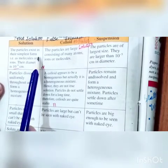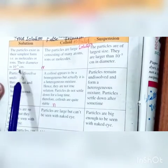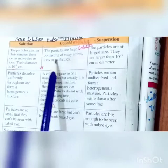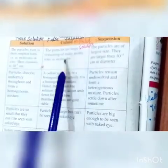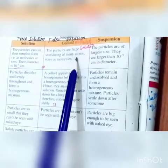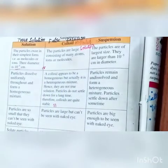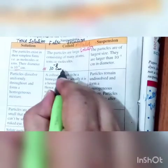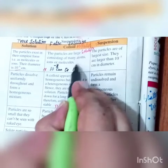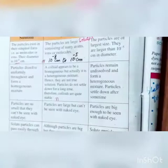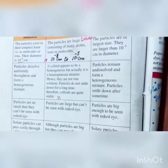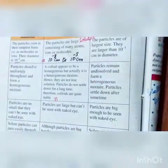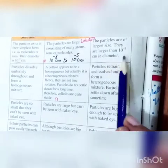In solution, particles exist in their simplest form as molecules or ions, and their diameter is 10 raised to power minus 8 centimeters. In colloidal solution, the particles are large, consisting of many atoms, ions, or molecules. Their size is intermediate, between 10 raised to power minus 8 centimeters to 10 raised to power minus 5 centimeters. For suspension, the particles are of larger size — greater than 10 raised to power minus 5 centimeters in diameter.